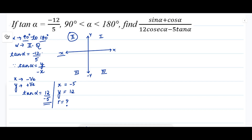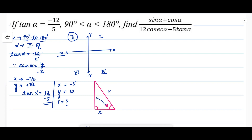To find r, let me draw a right angle triangle. The side opposite the 90-degree angle is the hypotenuse, represented by r. The side adjacent to angle θ is represented by x, called the adjacent side. The side opposite to angle θ is represented by y, called the opposite side.